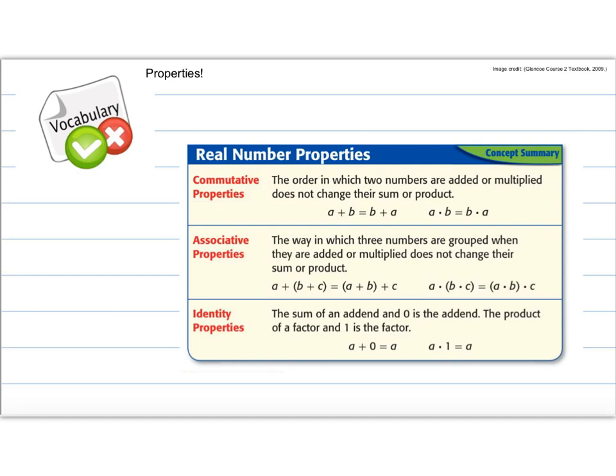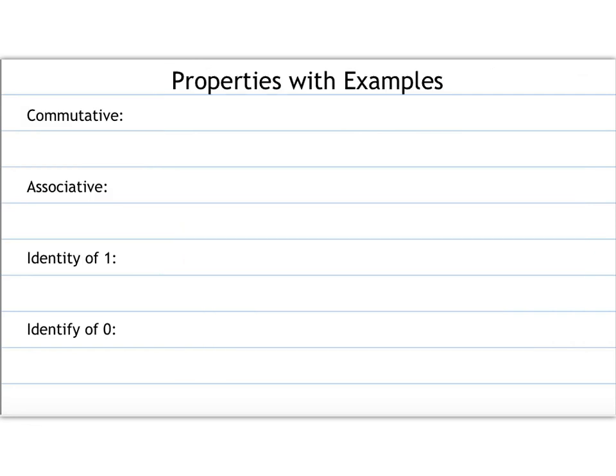I would like you to pause and write down these three properties and just write the example for each. Commutative property which you've probably already learned just means that with addition and multiplication you can flip them around and they're still the same. Associative property is again we can not necessarily flip them around but we can change the order that we add or subtract and then identity means that if we add anything to zero it stays the same and if we take a number and multiply it by one it stays the same.